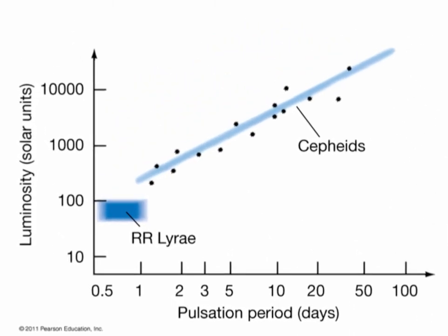This relationship between how bright a Cepheid star is and how long it takes to pulsate is called the Leavitt law. Here's a graph of the Leavitt law — it shows that the brighter stars take longer to complete a cycle. It shows the two types: the Cepheid and the related RR Lyrae stars. What this tells us is that for a given Cepheid star, if we can measure how long it takes to complete one cycle — the pulsation period — we can use this Leavitt law graph to figure out how bright the star is. For example, a star with a pulsation period of five days is approximately 1,000 times more luminous than the Sun.